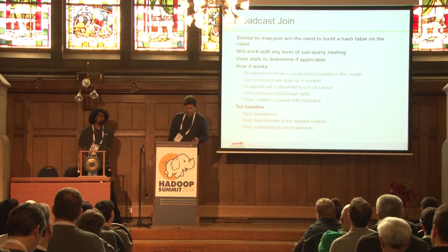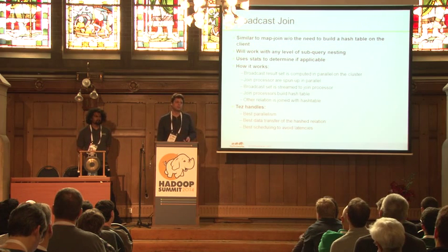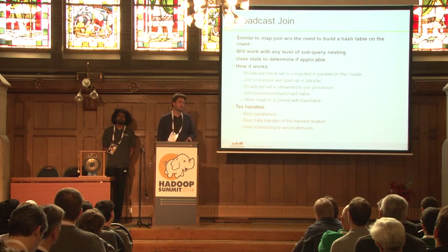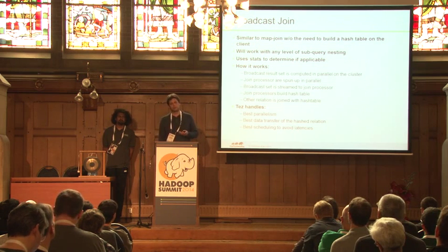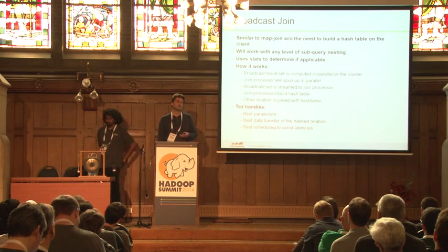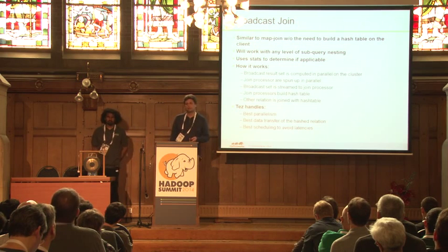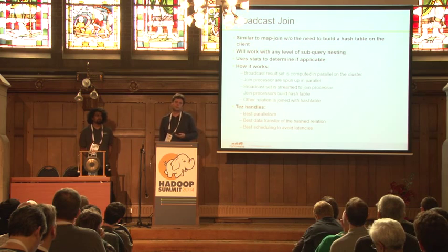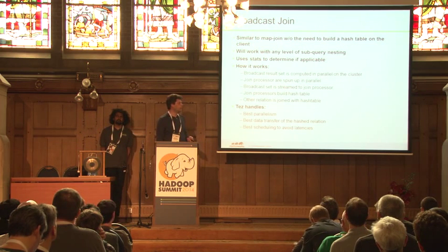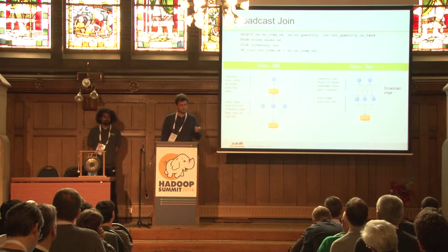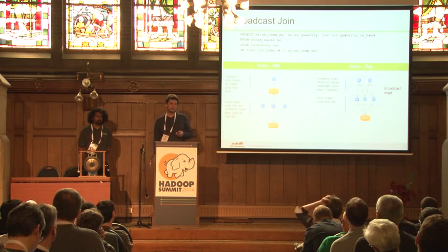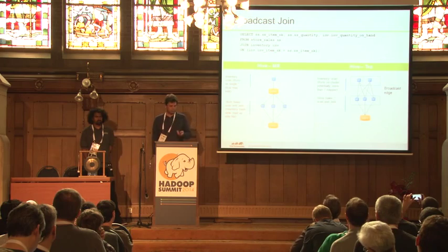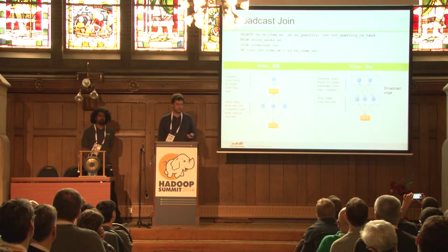Broadcast join — if you've used Hive, there is something called MapJoin. One side of the join is small enough to hold in memory and use a hash table. In MapReduce, this worked by processing the smaller table on the client, producing a hash table, and shipping it via distributed cache. In TEZ, this is much more flexible: we start processing nodes in the cluster for the smaller side, stream the table to the join nodes, build the hash table, and continue from there — and this can be done in parallel within a vertex.